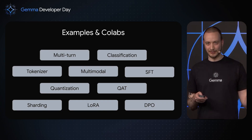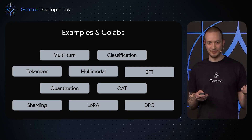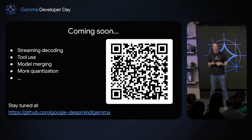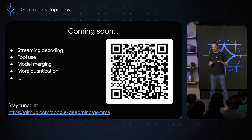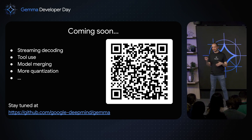On our website we have more features covered, such as quantization and DPU examples. This is just the beginning — very soon we plan to add streaming decoding, model merging so you can fine-tune multiple Gemma experts and merge their capabilities together, and more quantization options. If you're interested, check out our GitHub.